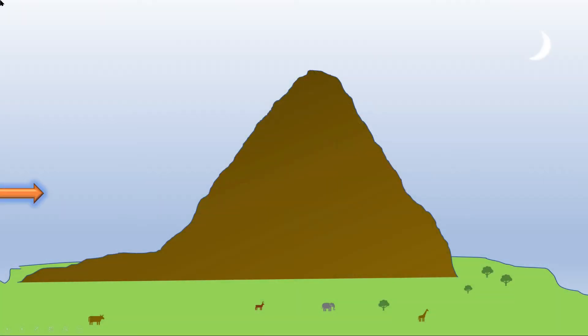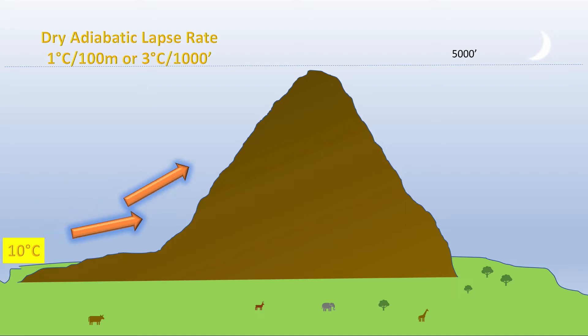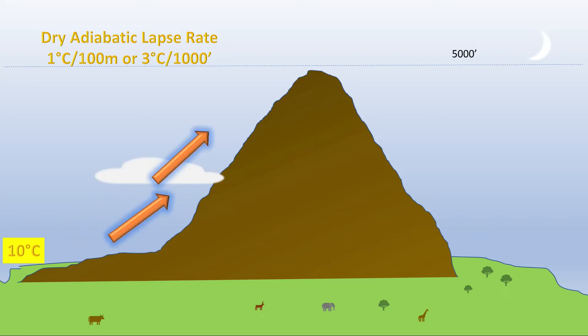Foehn winds are warm, dry winds that flow down the lee side of a mountain. When winds encounter a mountain high enough to block their passage, the air rises along the mountainside, cooling as it rises at the dry adiabatic lapse rate of one degree per 100 meters, until it reaches saturation at the lifting condensation level.